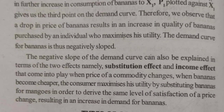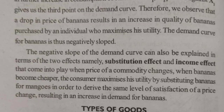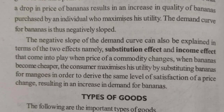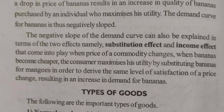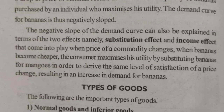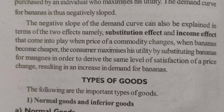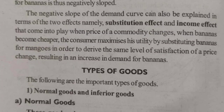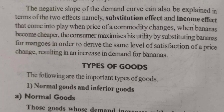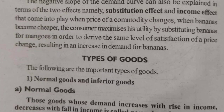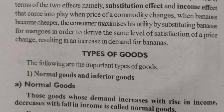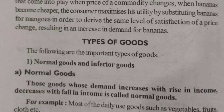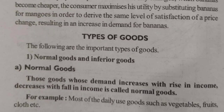There are many types of goods — normal goods and inferior goods. Normal goods are those goods whose demand increases with a rise in income and decreases with a fall in income. When I have money and income is good, I will purchase more of these goods.